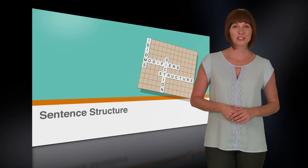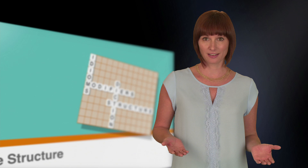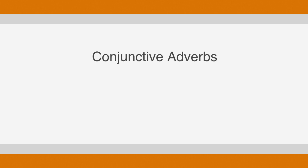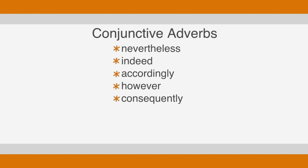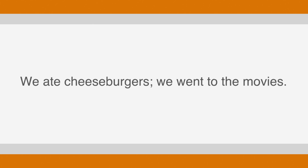But what if we wanted the sentence to be more expressive? Conjunctive adverbs are another group of connectors that can link independent clauses and require a semicolon when used this way. Conjunctive adverbs include: nevertheless, indeed, accordingly, however, consequently, therefore, in addition, and subsequently. Going back to our cheeseburgers example — 'we ate cheeseburgers' and 'we went to the movies' are both independent clauses. Adding the conjunctive adverb 'subsequently' gives us: 'we ate cheeseburgers; subsequently, we went to the movies.' Much better. Just remember the correct order: semicolon, conjunctive adverb, then comma.